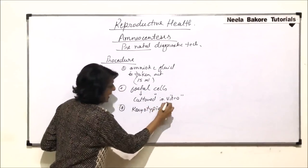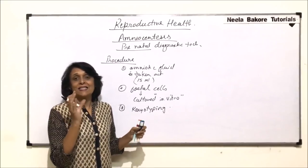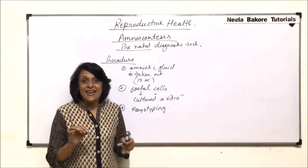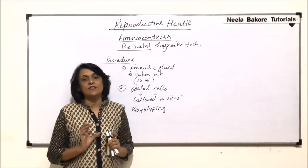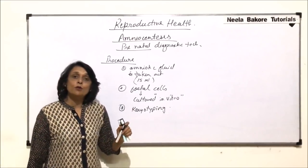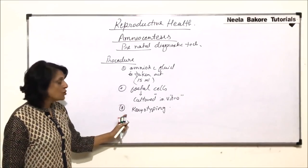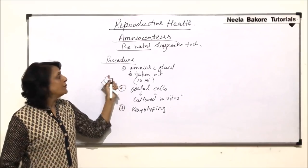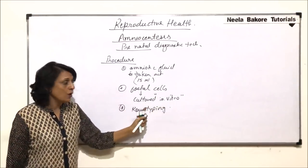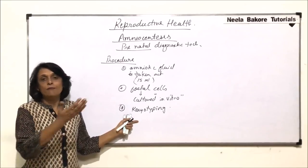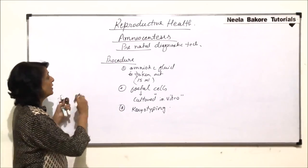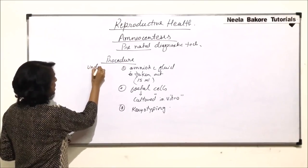After culturing, karyotyping is done. Karyotyping involves arresting cell division at metaphase, where chromosomes are thick; the chromosomes are stained, their pictures are taken, and then arranged in a systematic manner. When we examine this complete picture, we are able to find out chromosomal defects. So the steps are: amniotic fluid is taken out, fetal cells are cultured in vitro, and then karyotyped to detect many different defects.